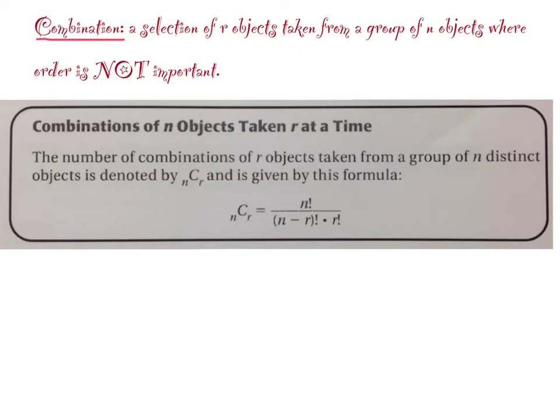When we have combinations, the number of combinations of r objects taken from a group of n distinct objects is denoted by nCr. Remember when we did permutations it was nPr, and now we have nCr. That's a different formula, so another one you've got to know. nCr equals n factorial over n minus r factorial times another r factorial in the denominator.